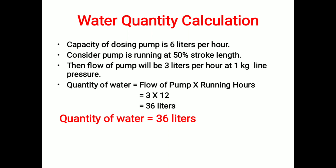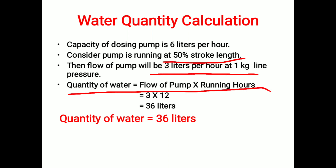The pump is running at 50% stroke length, that is 50% of its total capacity, which means it is running at 3 liters per hour at 1 kg line pressure. The quantity of water is calculated using the formula: Quantity of Water = Flow of Pump × Running Hours. The pump flow at 50% capacity is 3 liters per hour, and plant running hours is 12. After calculation, we get 36 liters — that is the quantity of water required.